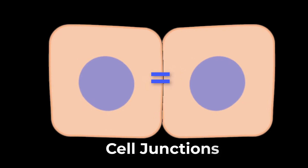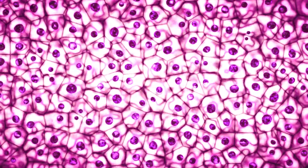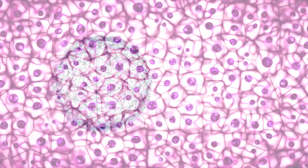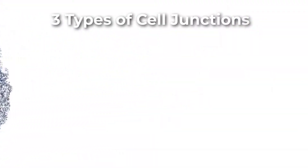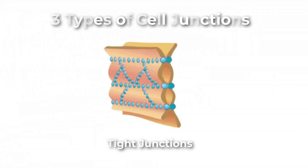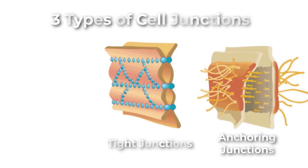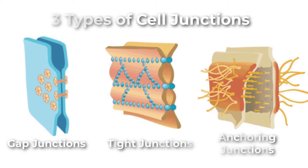Cell-to-cell junctions. Cells of epithelia are closely connected and are not separated by intracellular material. There are three basic types of connections: tight junctions, anchoring junctions, and gap junctions.